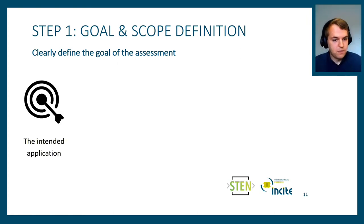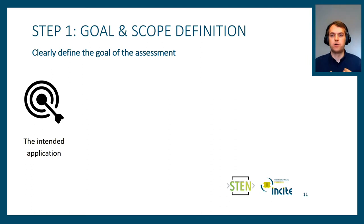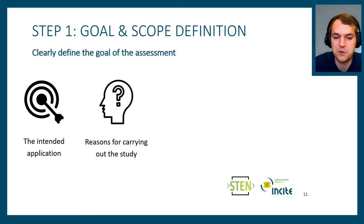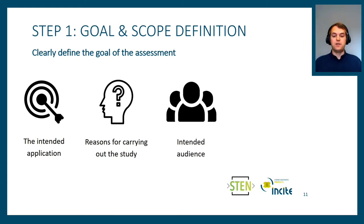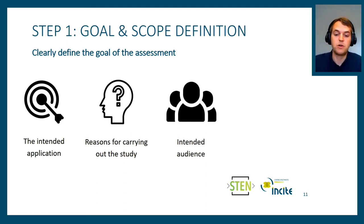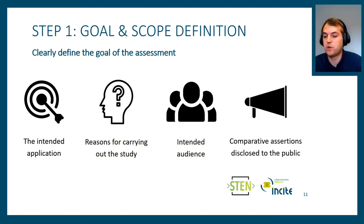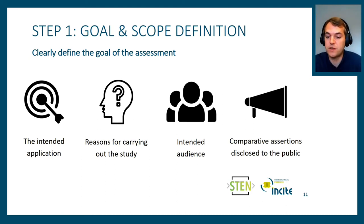When defining your goal, it's important to think about the intended application: will you use this internally to find improvement opportunities, or to communicate to clients? Your reasons for carrying out the study matter — is it truly to improve sustainability, or for commercial reasons? Also consider who your intended audience is. For external communication, you need to follow guidelines carefully and may need an external review, especially for comparative assessments comparing your product against a competitor's.